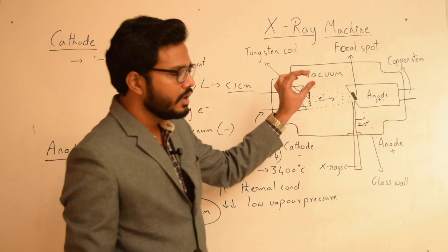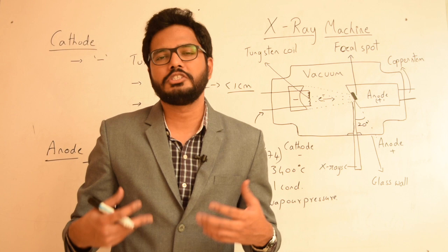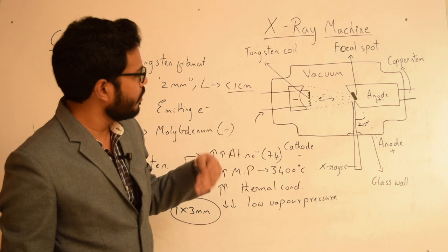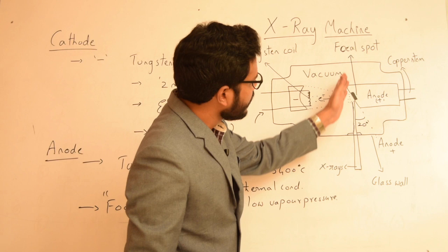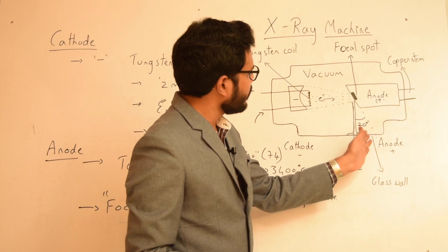However, when we decrease the size of the focal spot, there can be more heat generation leading to melting or even burnout of the filament. To overcome this, the focal spot is angulated at 20 degrees compared to the central axis of the x-ray beam. When this focal spot is angulated, the apparent size of the focal spot reduces.